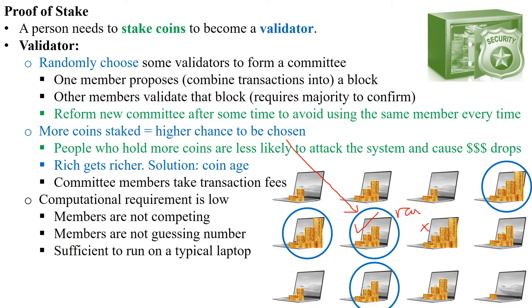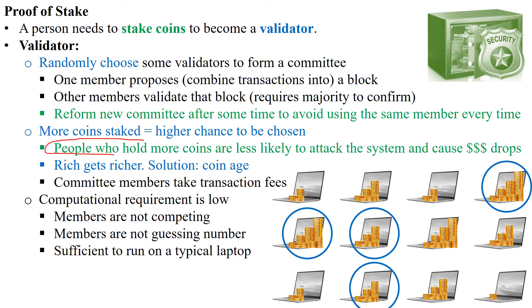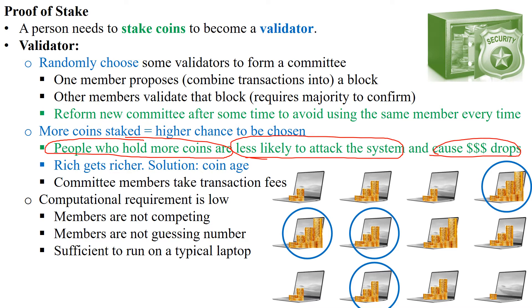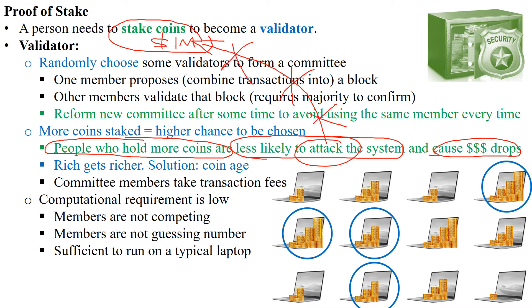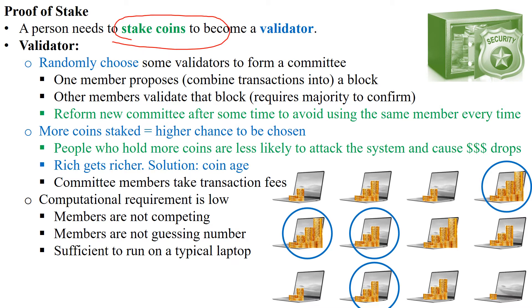Why give a higher chance to people who have more coins? Because people who hold more coins are less likely to attack the system and cause the coin value to drop. For example, if you staked one million dollars in the network, it is not rational for you to attack your own money and cause that one million to become half a million. In proof of stake, we can safely say that most people who stake their coins are good users.